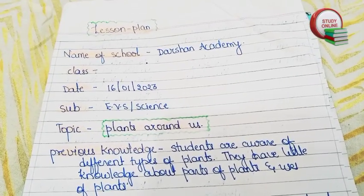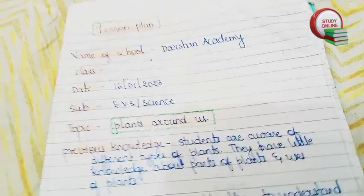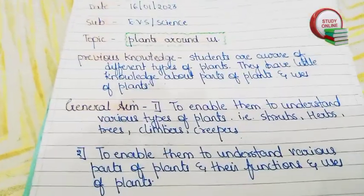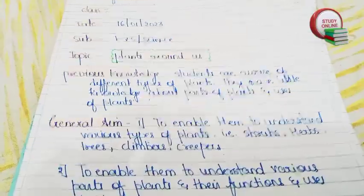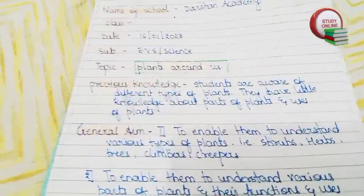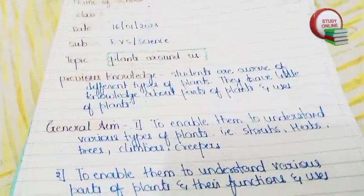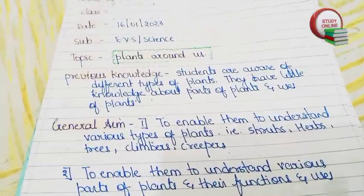Here you can see the previous knowledge section. We have to write what students are already aware of. So they are aware of different types of plants, and they are also a little bit aware of parts of plants.